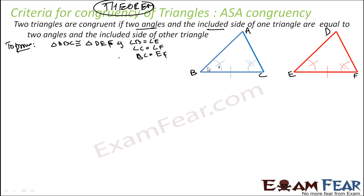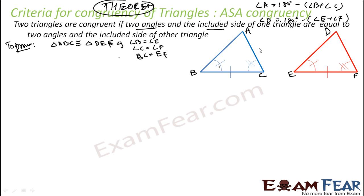A logical way of thinking is: if two angles of these triangles are equal, the third angle will also be equal, because angle A equals 180 minus angle B minus angle C. If angle B and angle C are equal, then angle A will also be equal to the corresponding angle. So if all three angles are equal but only one side is equal, the triangles have to be congruent. Let's try to prove it.